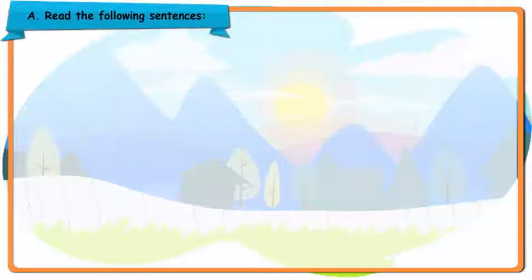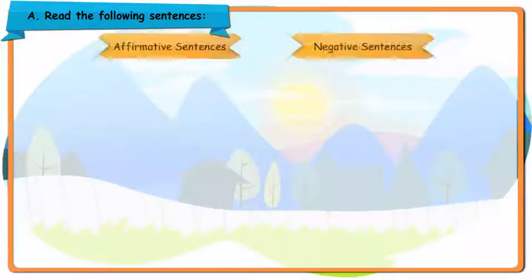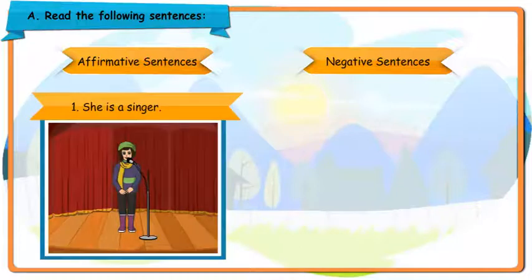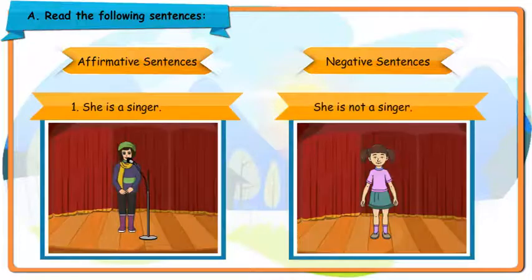Chapter 3: Negative Sentences. Read the following sentences. Affirmative Sentences, Negative Sentences. She is a singer. She is not a singer.